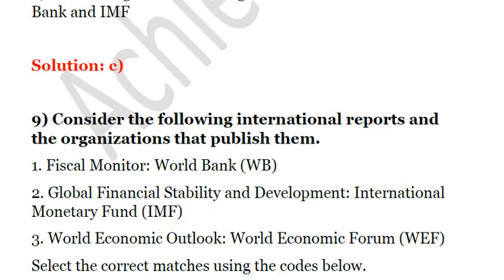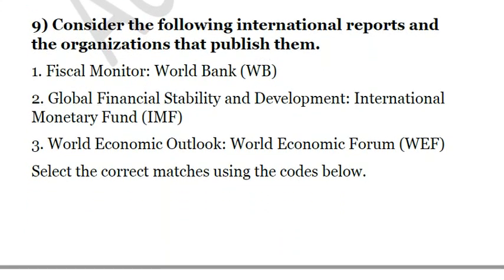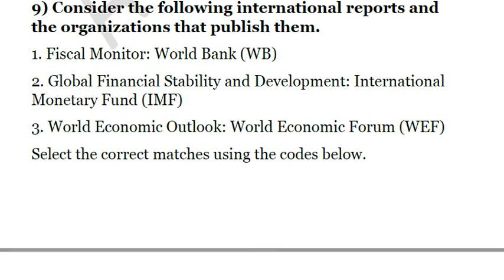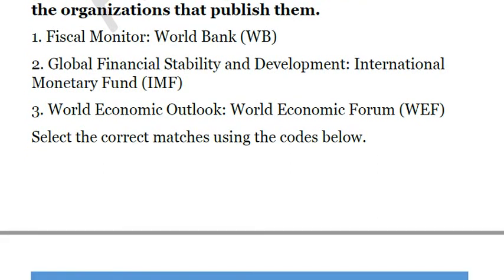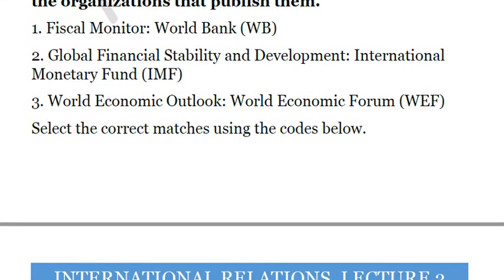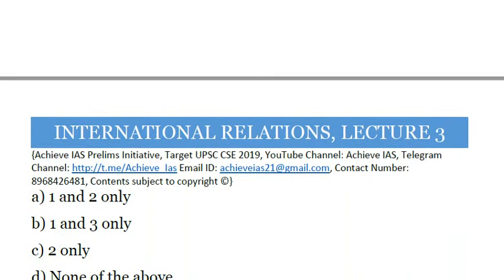Consider the following international reports and the organizations that publish them. First, Fiscal Monitor — World Bank. Second, Global Financial Stability and Development — IMF. Third, World Economic Outlook. All of these reports are actually published by IMF. So only the second pairing is correct, as Fiscal Monitor and World Economic Outlook are also published by IMF but are incorrectly attributed here. So only one is correct and the answer is C.